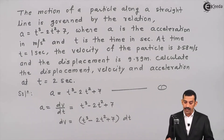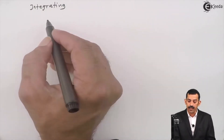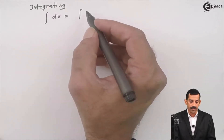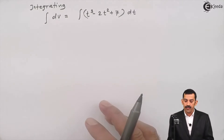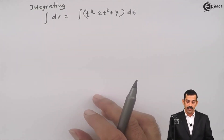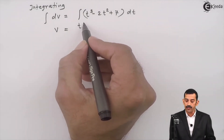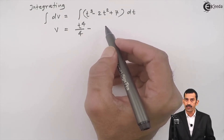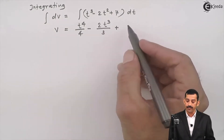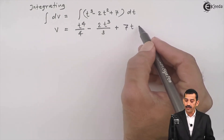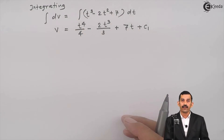Now we integrate this equation. Integrating both sides: the integral of dv equals the integral of (t³ - 2t² + 7) dt. Integration gives v = t⁴/4 - (2/3)t³ + 7t + C₁. This equation is in terms of velocity v, time t, and constant of integration C₁.